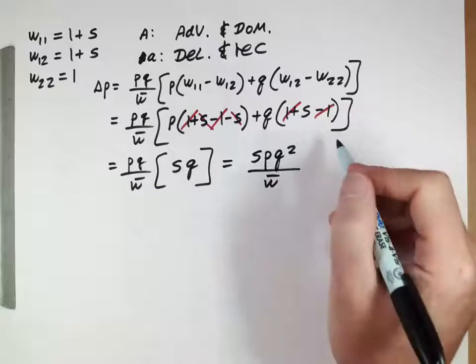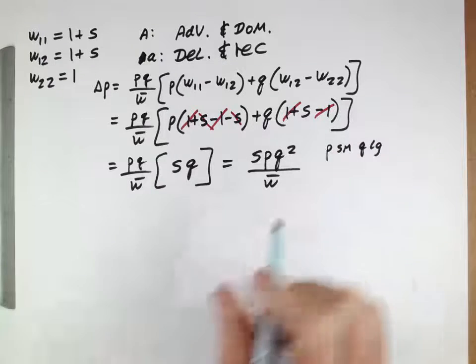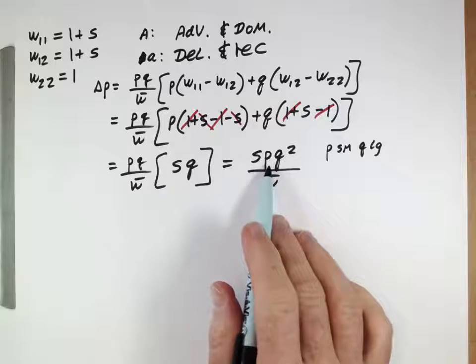So, if we think about this means is when P is small and Q is large, that would be when this thing is the largest it could possibly be, right?